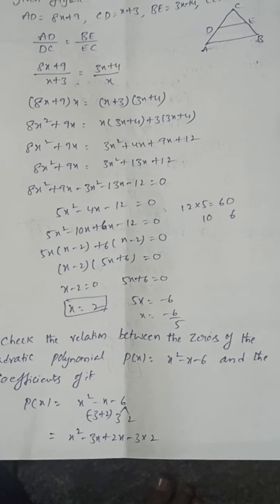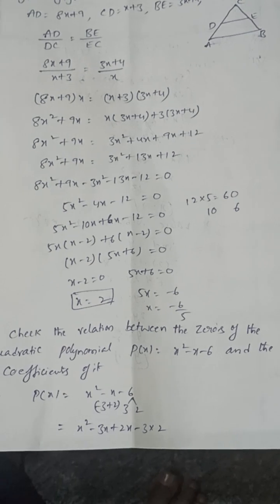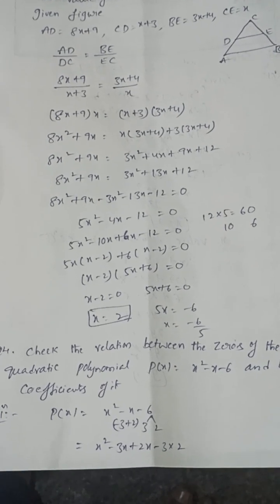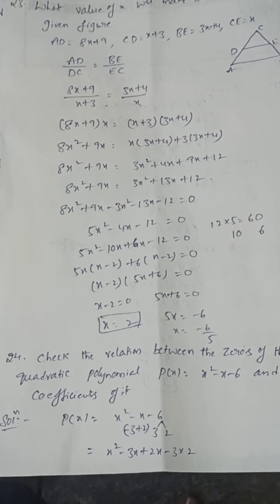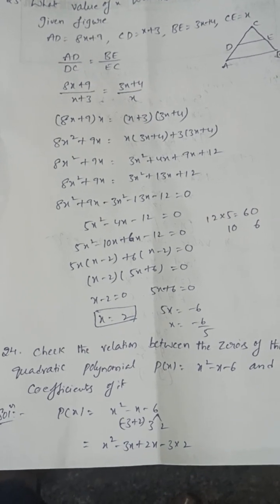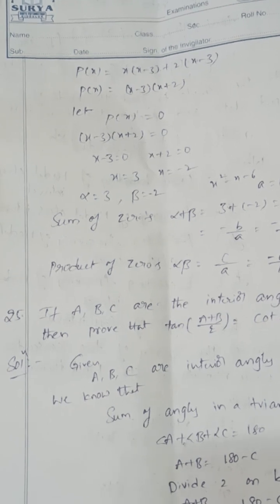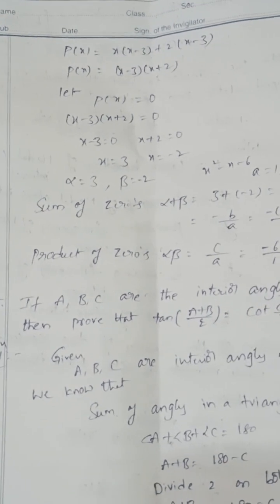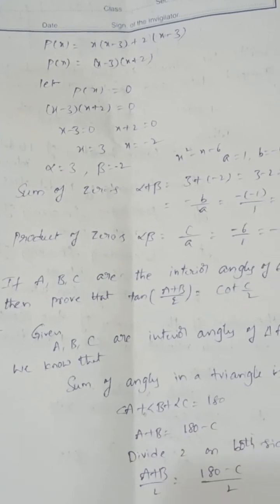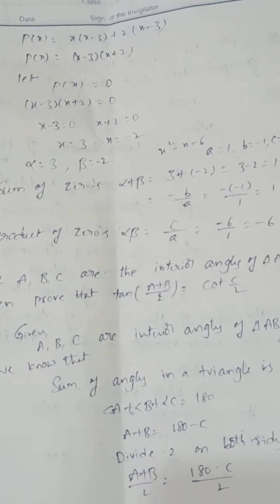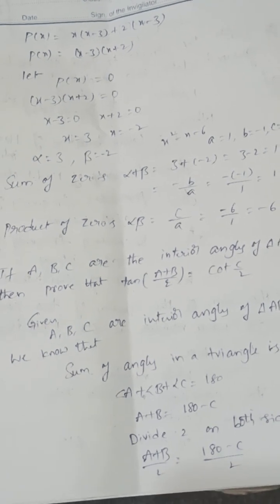Check the relation between zeros of P(x) = x² − x − 6 and the coefficients. Factorising: x² − 3x + 2x − 6 = (x−3)(x+2), so P(x) = 0 gives x = 3 and x = −2. Alpha = 3, Beta = −2. Sum of zeros = 3 + (−2) = 1 = −b/a = −(−1)/1 = 1. Product of zeros = 3 × (−2) = −6 = c/a = −6/1.